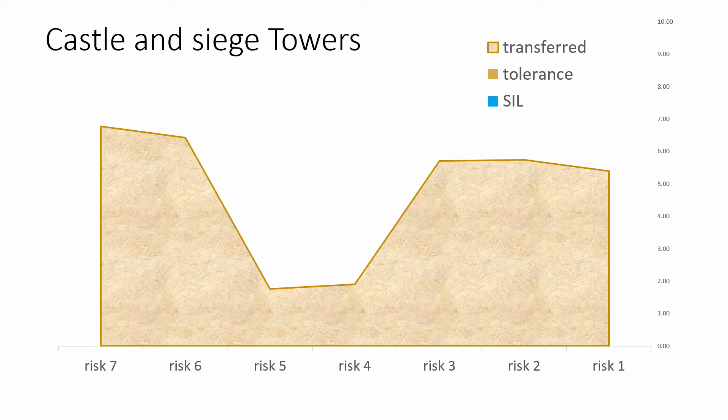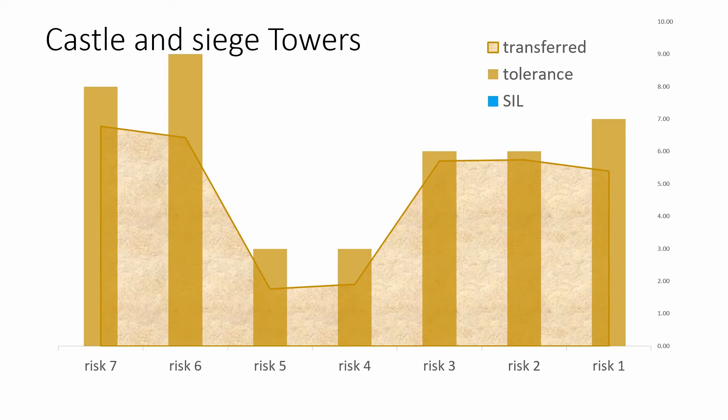Usually this indicates what extra risk reduction we need. Here I can just say this is the decision I have made: risk 2 and risk 3 are SIL 0 — you don't have to do anything, the system will be fine. Risk 1, risk 4, risk 5, and risk 7 just need the minimum safety system, which is SIL 1 — Safety Integrity Level 1. And risk 6 you need to make sure you are going to defend against the highest level by just trying to increase your system safety.